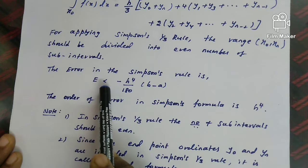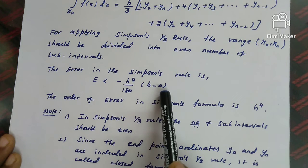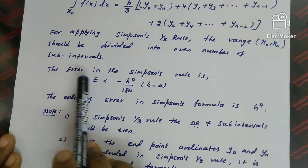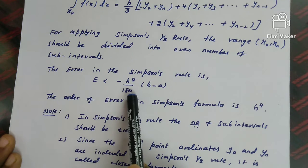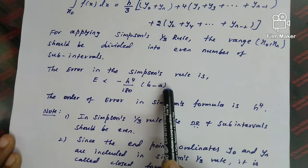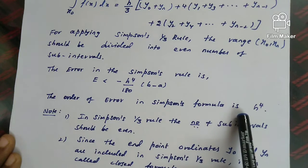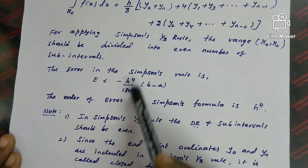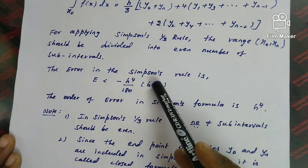The error in Simpson's rule: error e is less than minus h⁴ by 180 into (b minus a). So the order of error is h⁴.